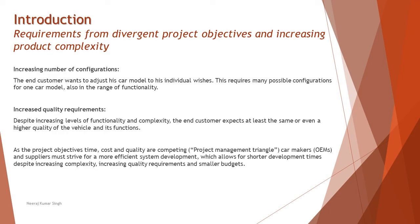Additionally, when you talk about the increasing number of configurations, that is another important parameter. The end customer wants to adjust their car model to their individual wishes — it must be possible to change window tinting, turn the color of a screen, use power sensors, and other abilities. This requires many possible configurations for one car model. Configuration means settings in simple terms: if you want, you can have a dark theme; if you want, you can have a light theme. The same concept can be applied to any feature which you have in a variant.